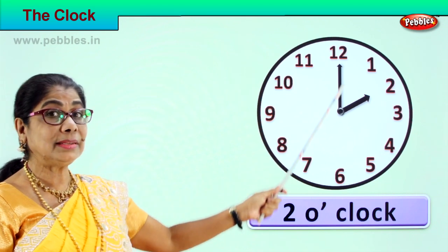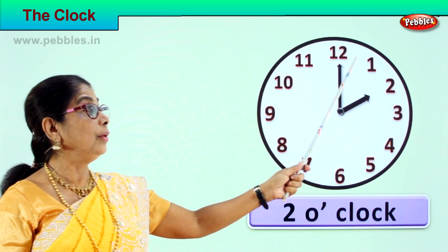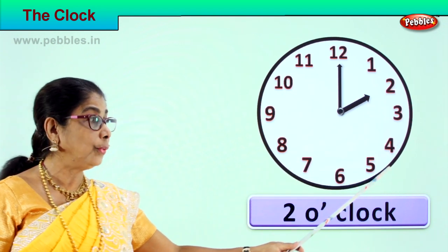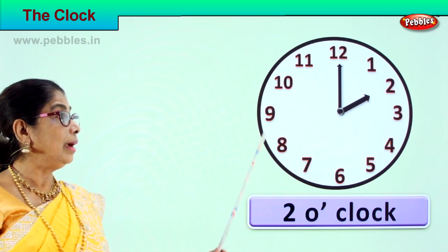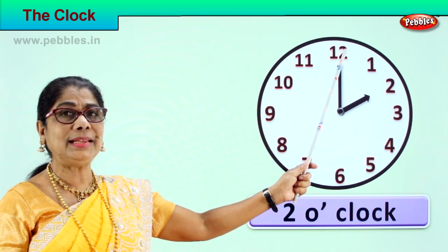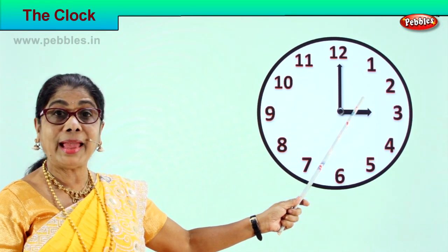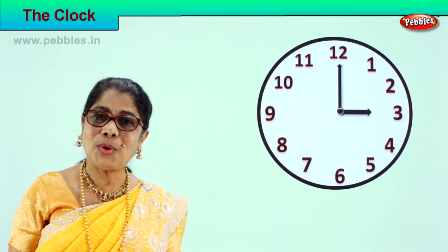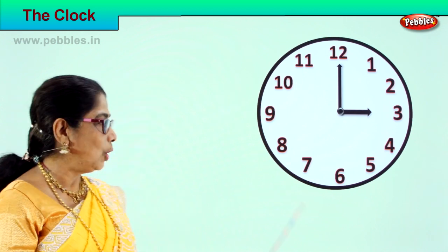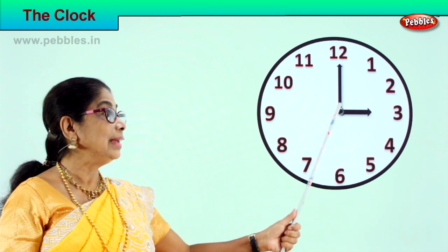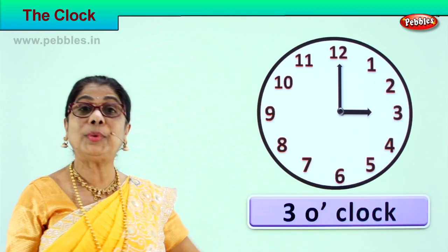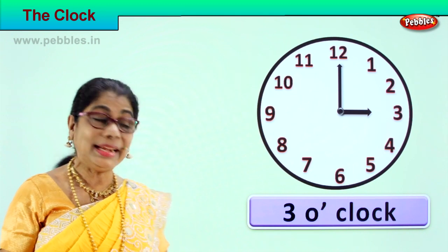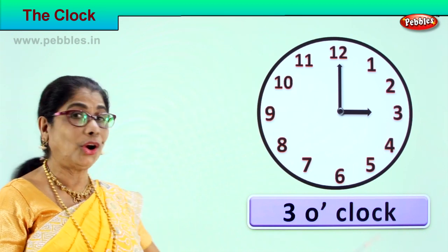What happens next? The minute hand goes from one to two, two to three, four, and it goes right round and comes and stays at twelve. Then the hour hand shifts from two to three. How do you read the time? The hour hand is pointing towards three. So we say three o'clock. We read it as three o'clock.